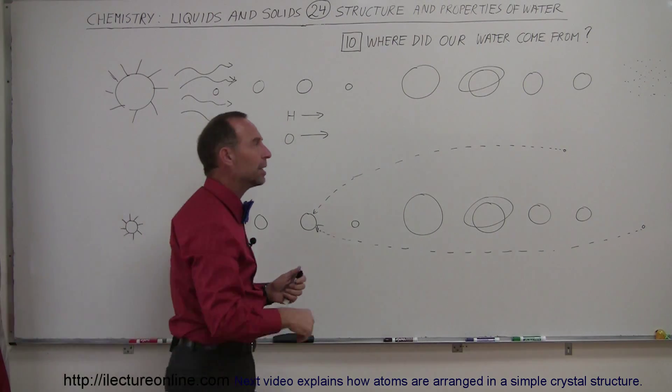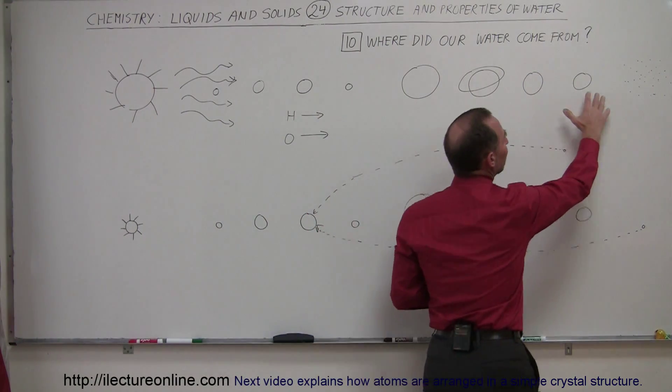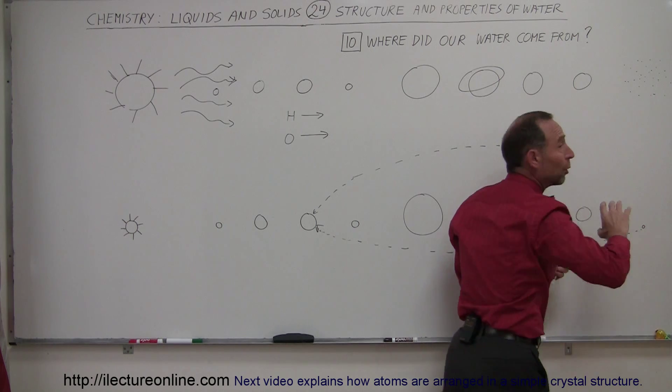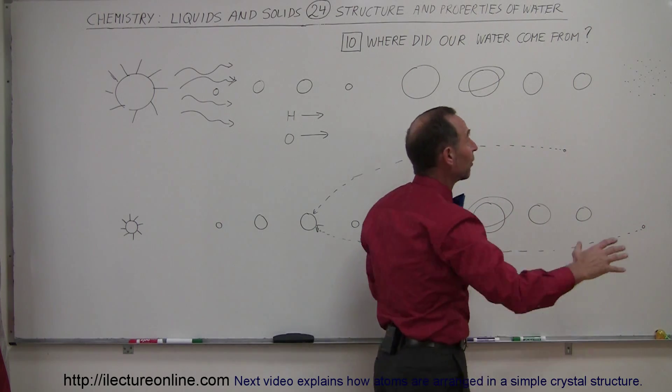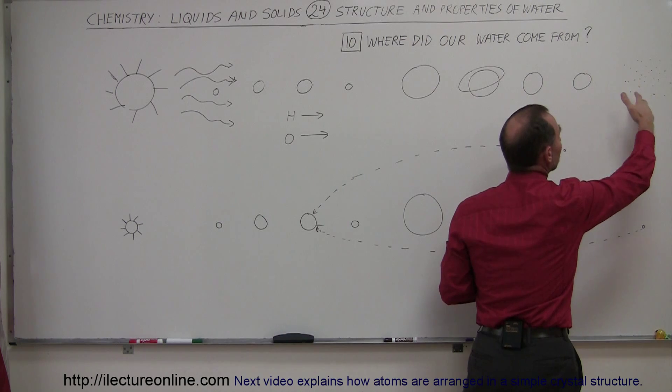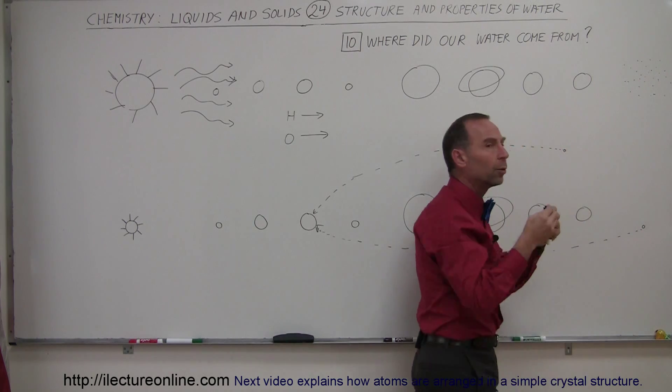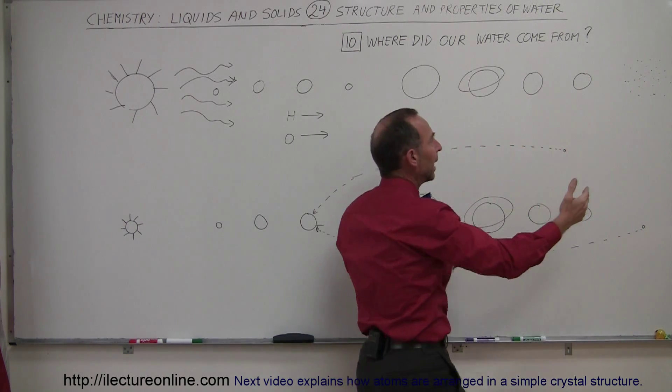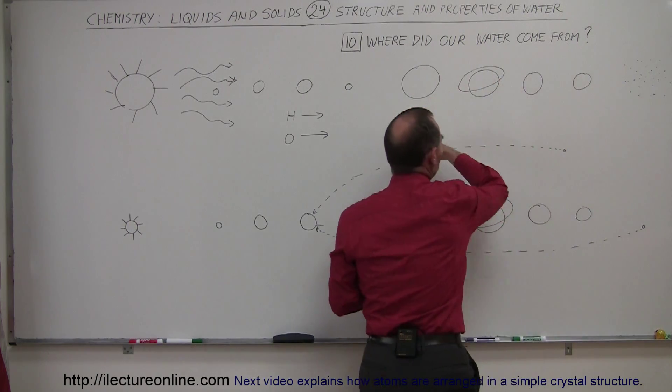But what happened over the years was all these icy bodies out there, which we now know as comets, there were billions and billions of them, they were interacting with each other gravitationally, and once in a while one would get a pull or a tug, and it would come streaming into the inner solar system.